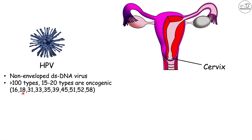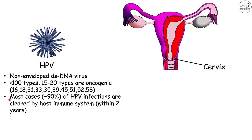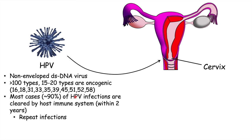Types 16 and 18 are the most common causes of cervical cancer, with type 16 causing at least half of all cases. Importantly, 90% of HPV infections are cleared by the host immune system within two years. Repeat infections, immune system problems, and infection with high-risk HPV variants are therefore critical factors in the eventual onset of cervical cancer.